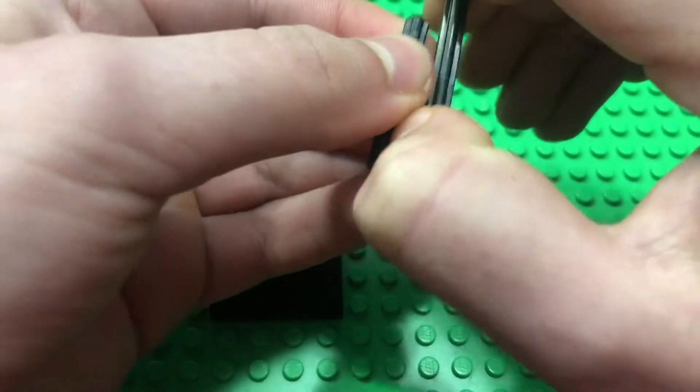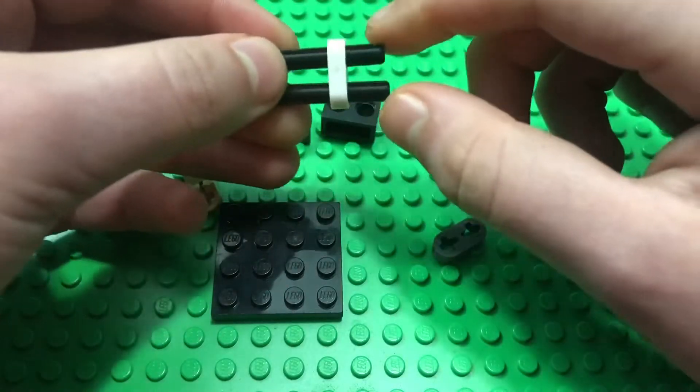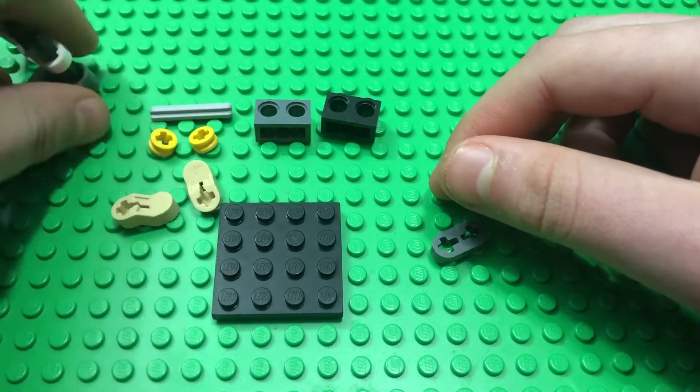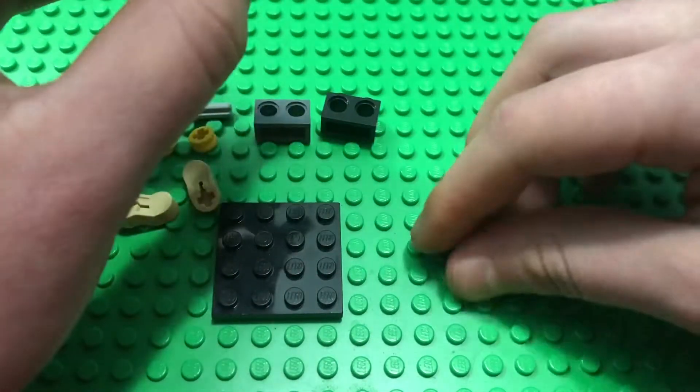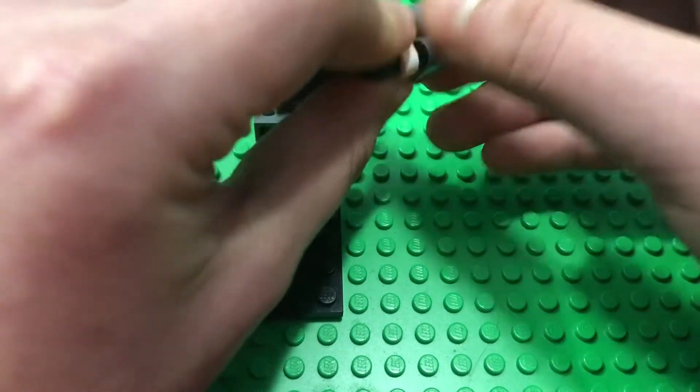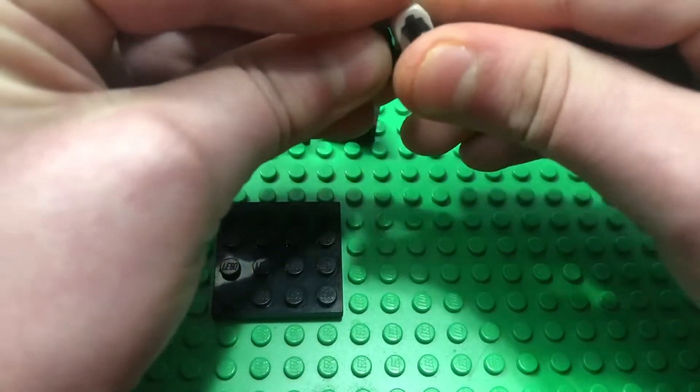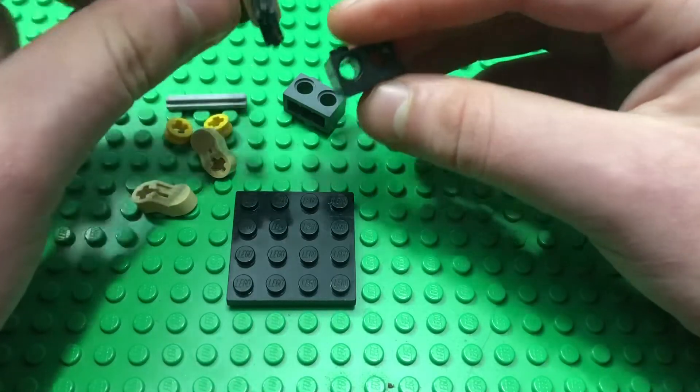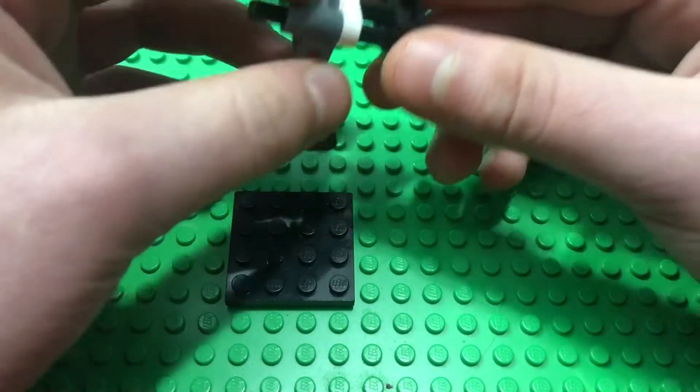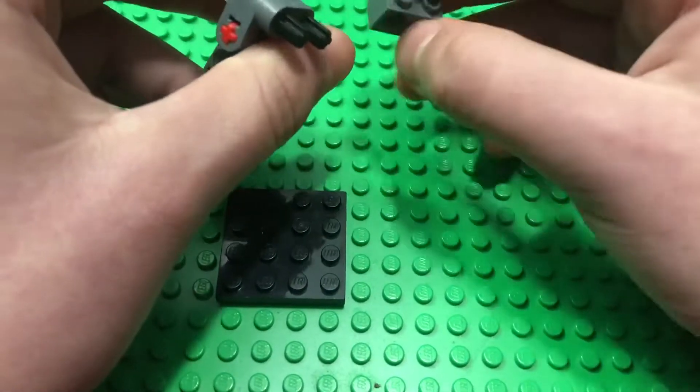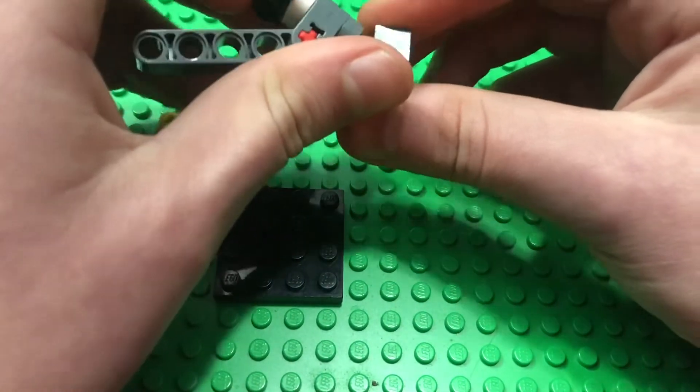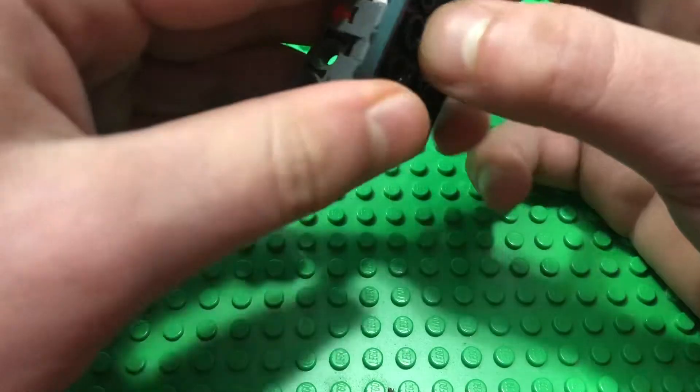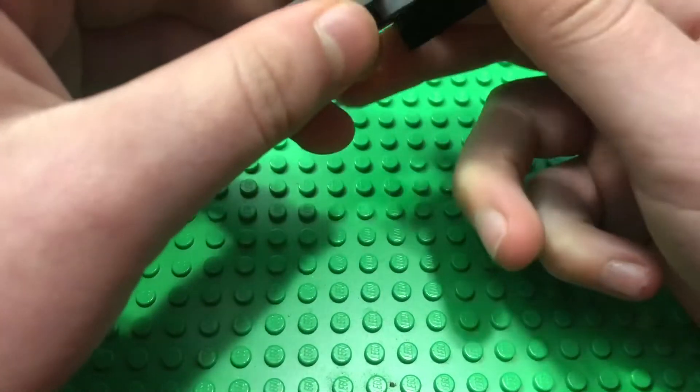You put them through and you push them through until they're about one stud length sticking out. Next you want to take your rod and put it through. Then take your other thing and put it over like that. Make sure there's one sticking out on each side. Take your two by one with two holes and put it in the axles facing upside down like this.